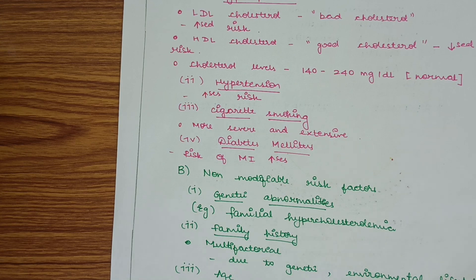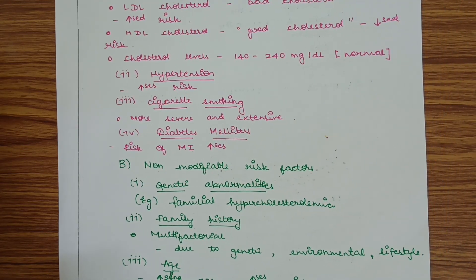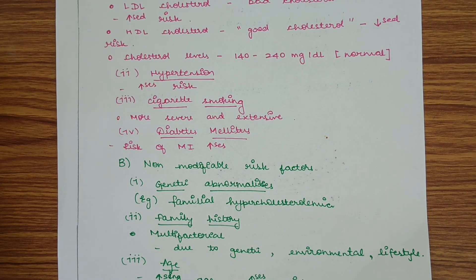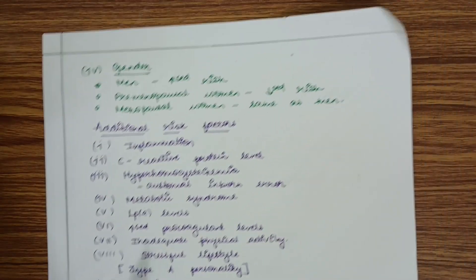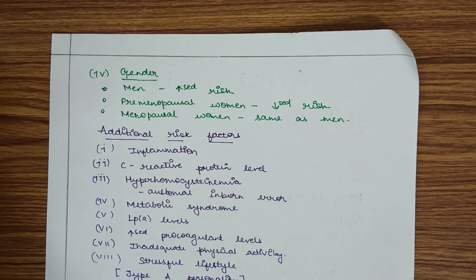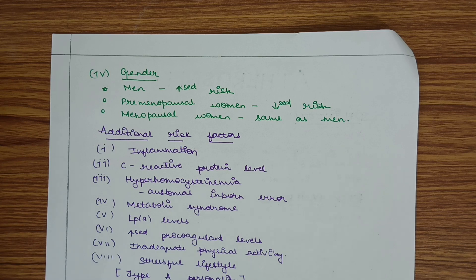Non-modifiable risk factors include genetic abnormalities, family history, age, and gender. Genetic abnormalities include familial hypercholesterolemia. Family history is mostly multifactorial, due to genetic, environmental, or lifestyle factors. Increasing age increases the risk of atherosclerosis. Men have increased risk compared to premenopausal women; menopausal women generally have the same risk as men. The decreased risk in premenopausal women is mainly due to the effect of estrogen.